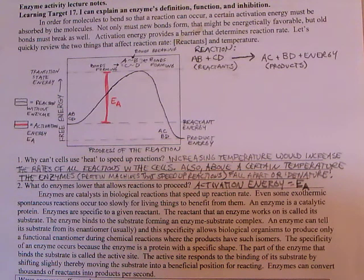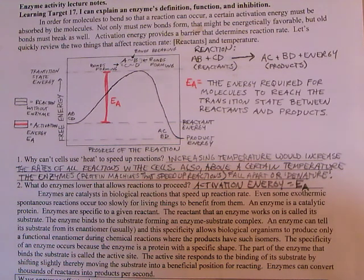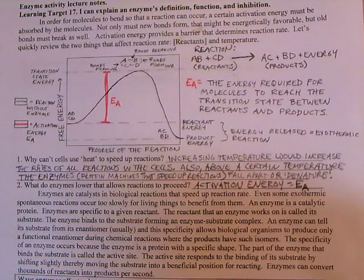This hump here is called the activation energy. It was the energy required for molecules to reach the transition state between reactants and products, and as I stated earlier, this is the barrier that determines reaction rate in a chemical reaction.